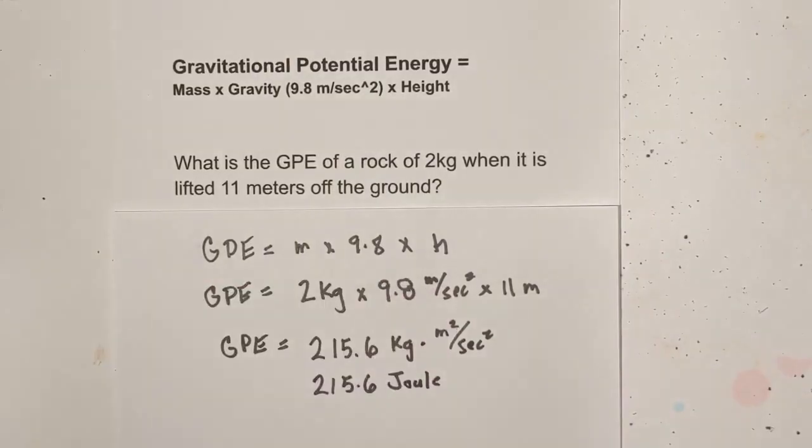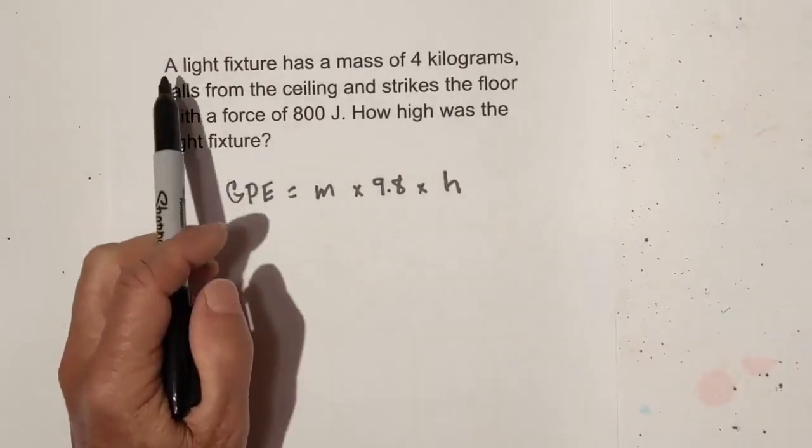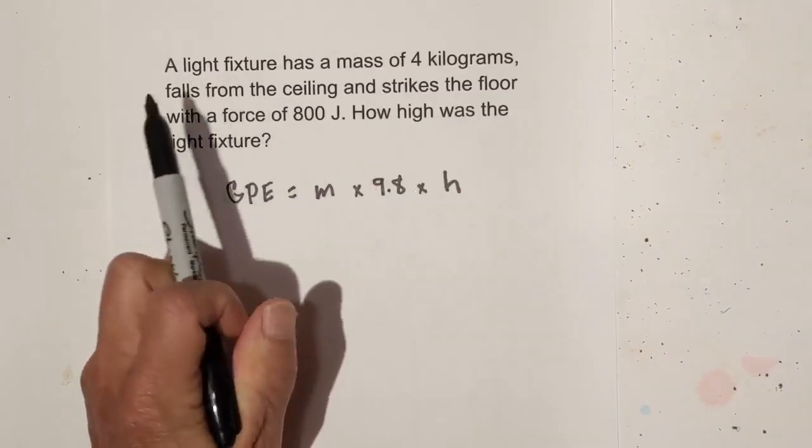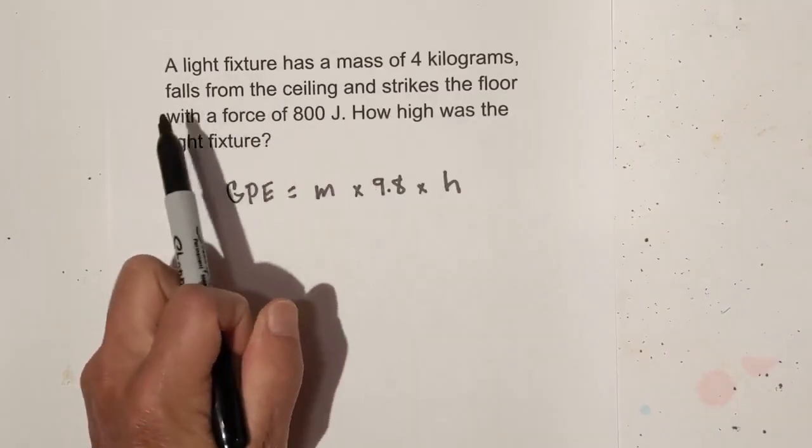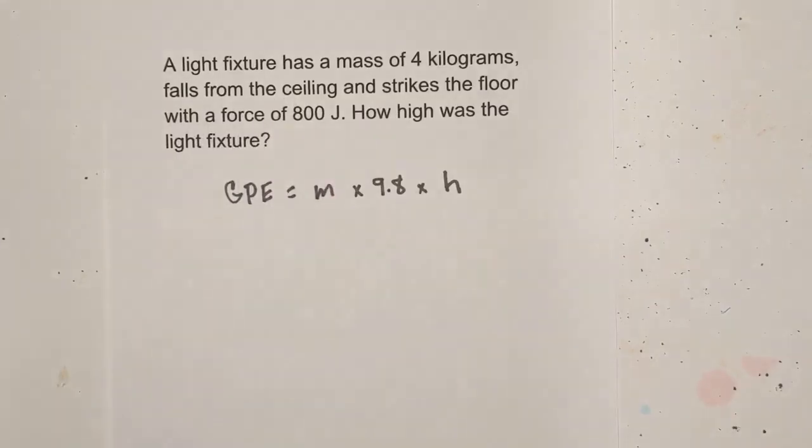Now, let's work another type of problem. Let's look at this next problem. A light fixture has a mass of 4 kilograms, falls from the ceiling, and strikes the floor with a force of 800 joules. How high was the light fixture?